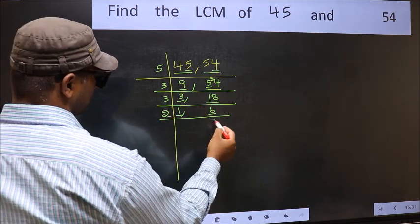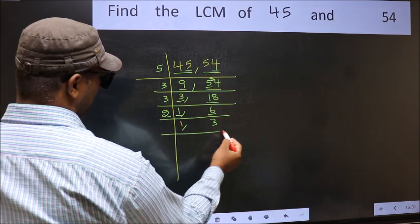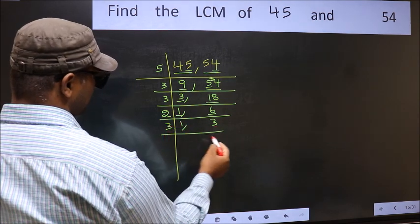6 is 2, 3 is 6. Now we have 3. 3 is a prime number, so 3, 1 is 3.